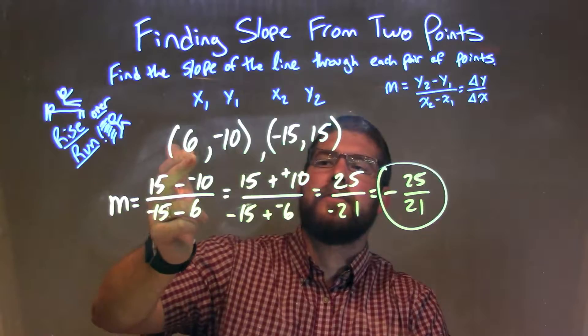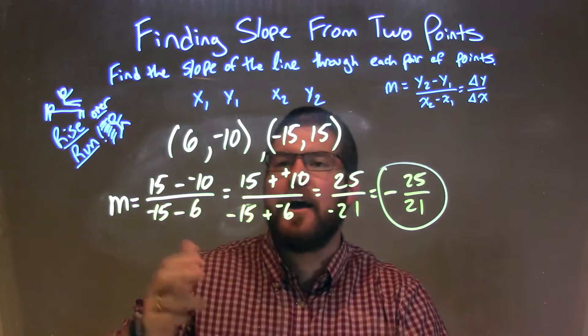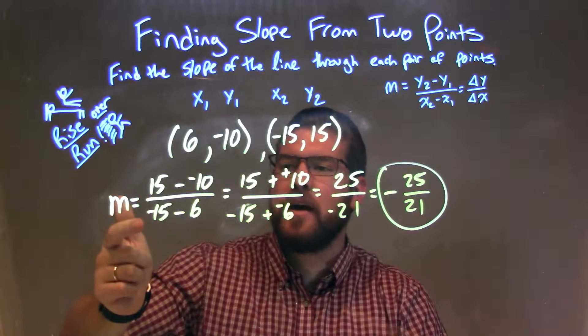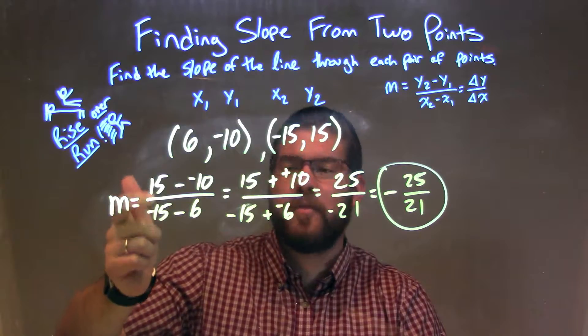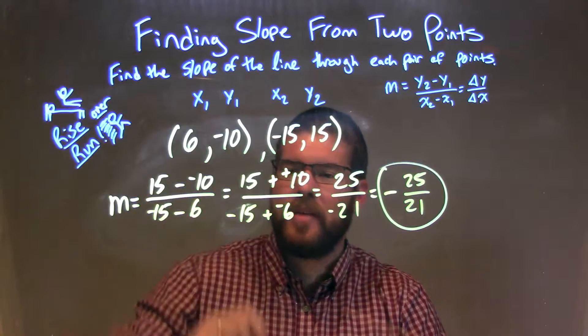So, let's recap. I was given these two points, 6, negative 10, and negative 15, positive 15. I have my change in y over change of x, delta y over delta x. So we have our y2 minus y1 over x2 minus x1.